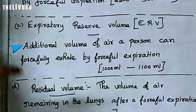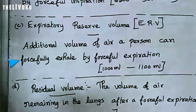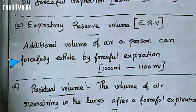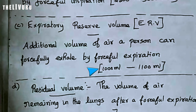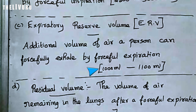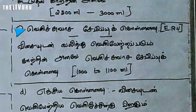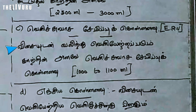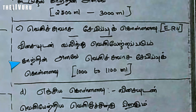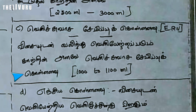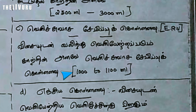Additional volume of air a person can forcefully exhale by forceful expiration. That is equal to 1000 mL to 1100 mL. This is the Expiratory Reserve Volume.